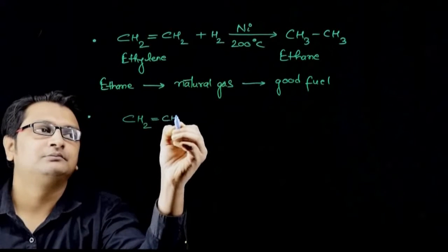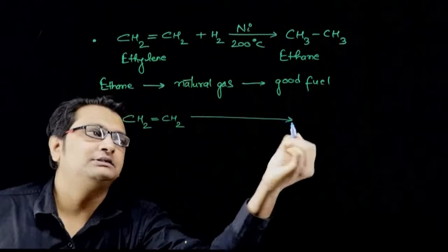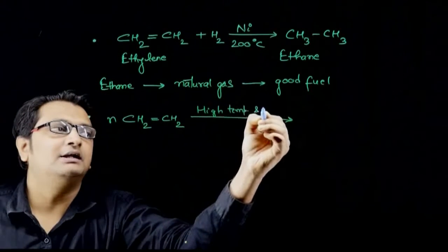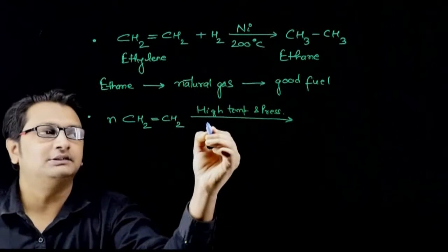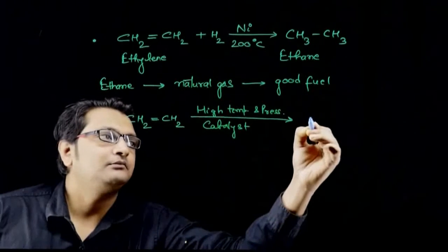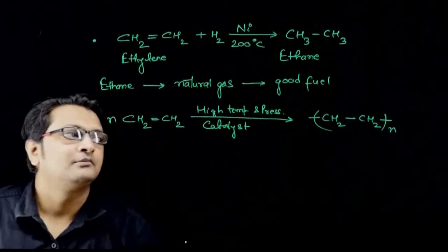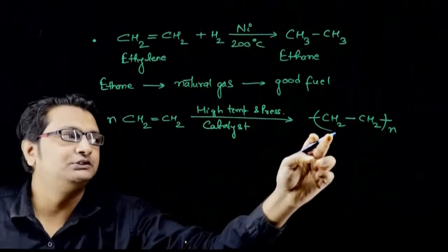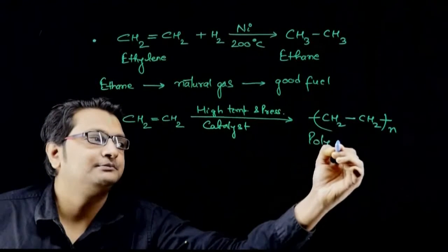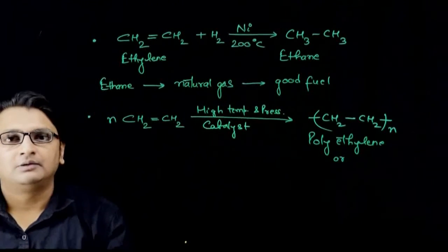So ethylene, being an unsaturated hydrocarbon, gets polymerized at high temperature and high pressure conditions in the presence of a catalyst to form a polymerized long chain of CH₂ bonded to CH₂. Its name is polyethylene, and we generally know it